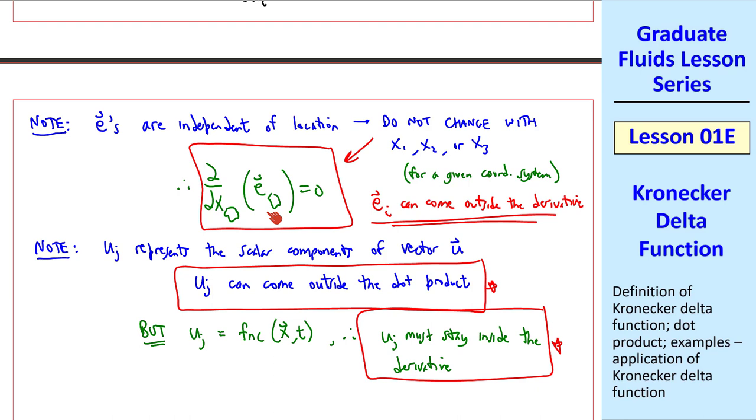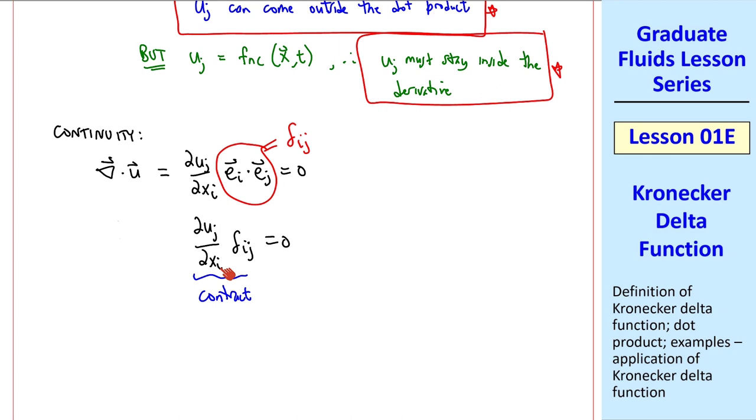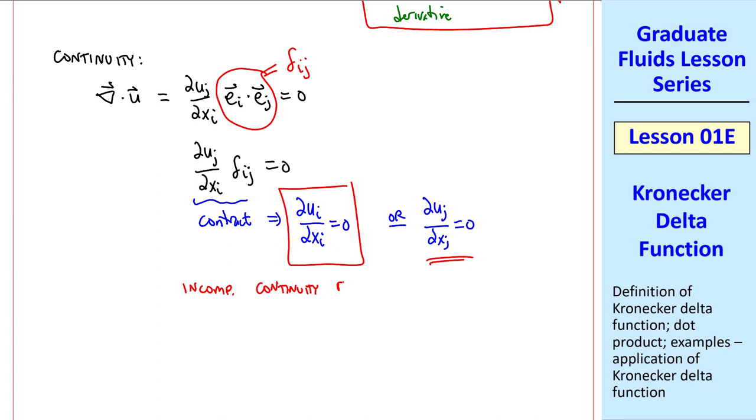Our continuity equation can be written as del uj del xi, dot product of these two e's, equals zero. But recall that this combination is delta ij. So we can write del uj del xi, delta ij equals zero. But we can contract this. Keep in mind that this is one only when i equals j. So this becomes del ui del xi equals zero. This is our incompressible continuity equation in simplified tensor notation. After some practice with this, when you see this equation, you immediately recognize this as the incompressible continuity equation.